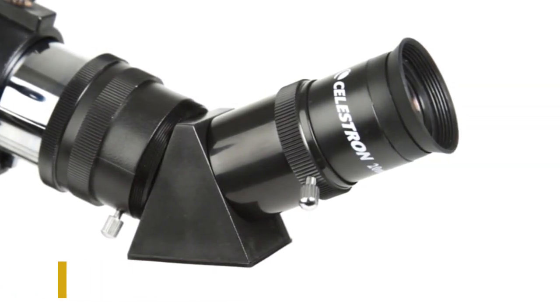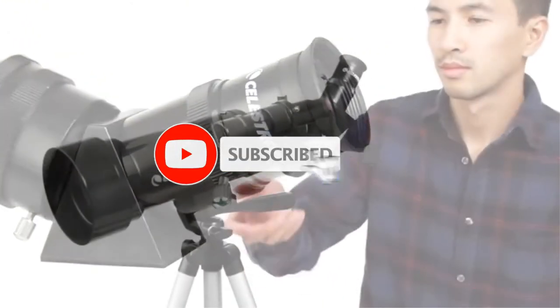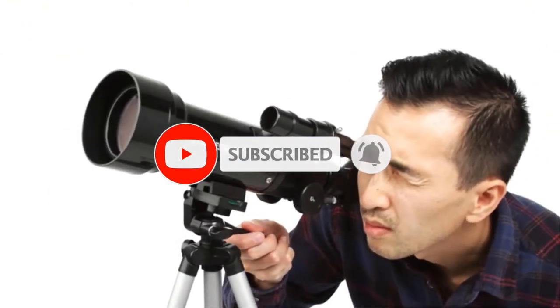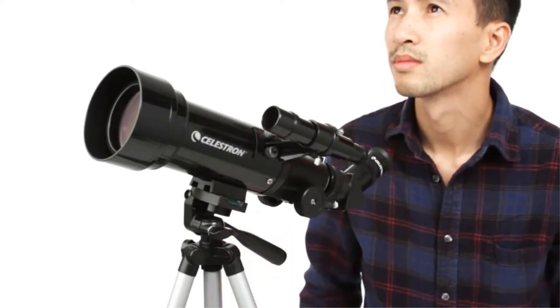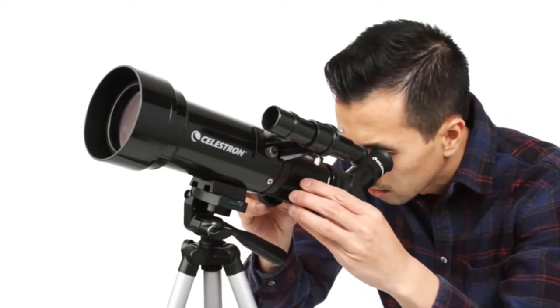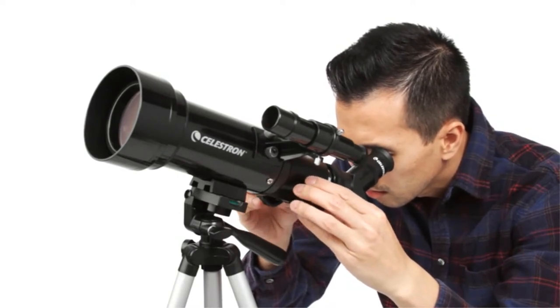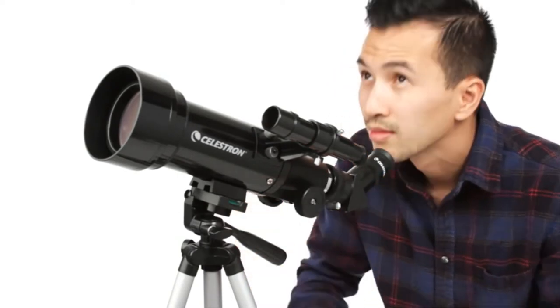The Celestron 70mm travel scope features high-quality, fully coated glass optics, a potent 70mm objective lens, a lightweight frame, and a custom backpack to carry it all. Its quality is unmatched in its class and against competitors.